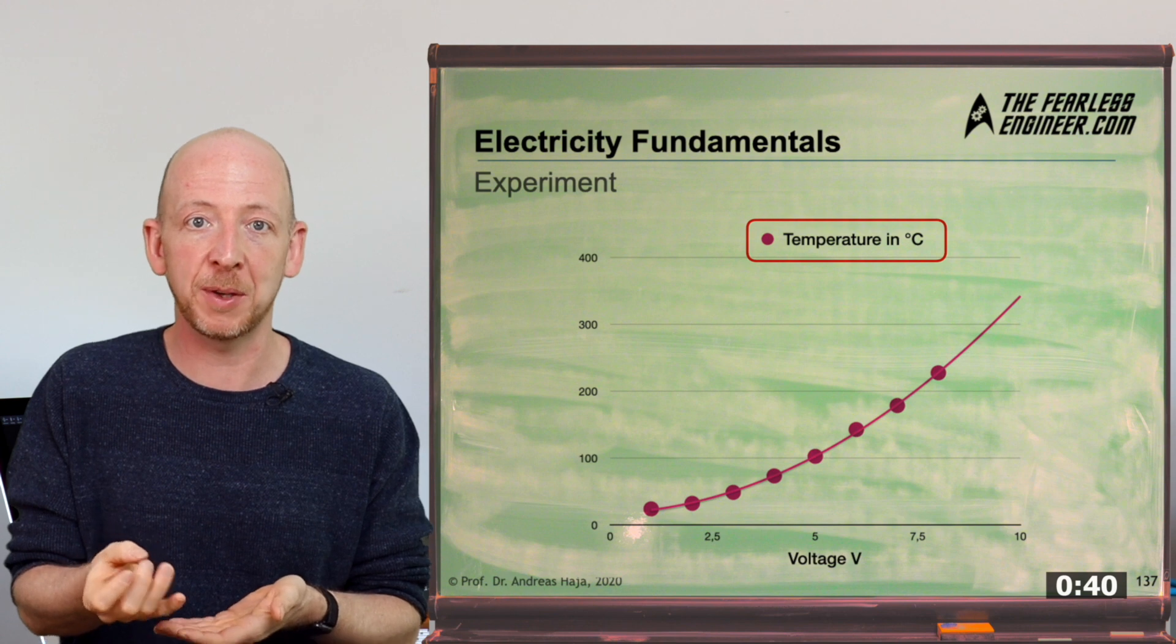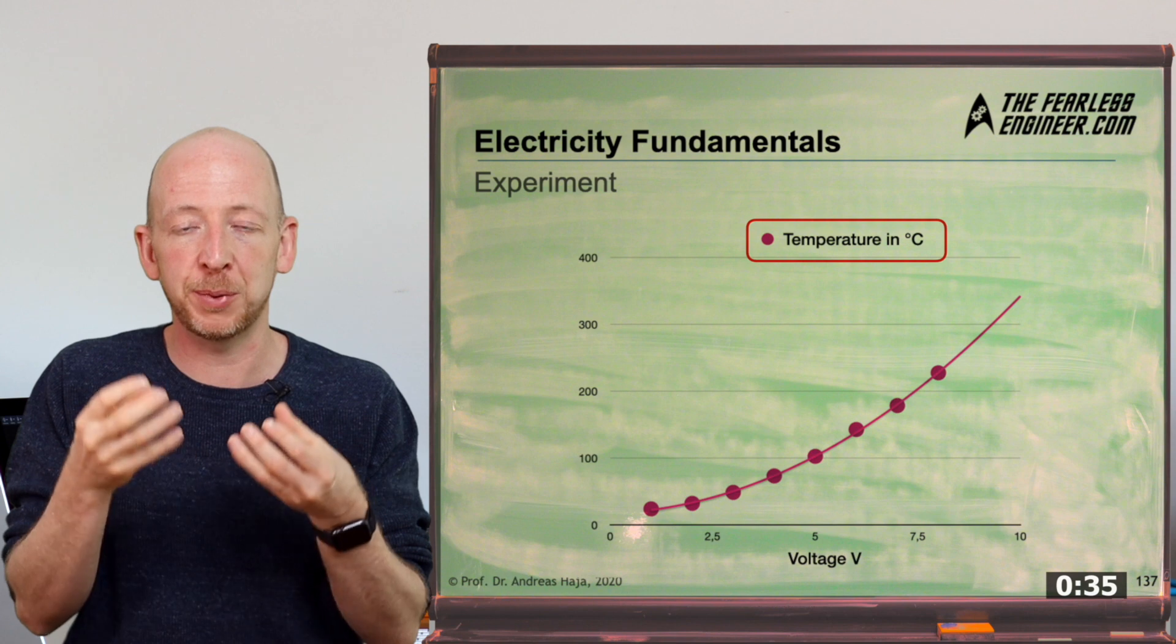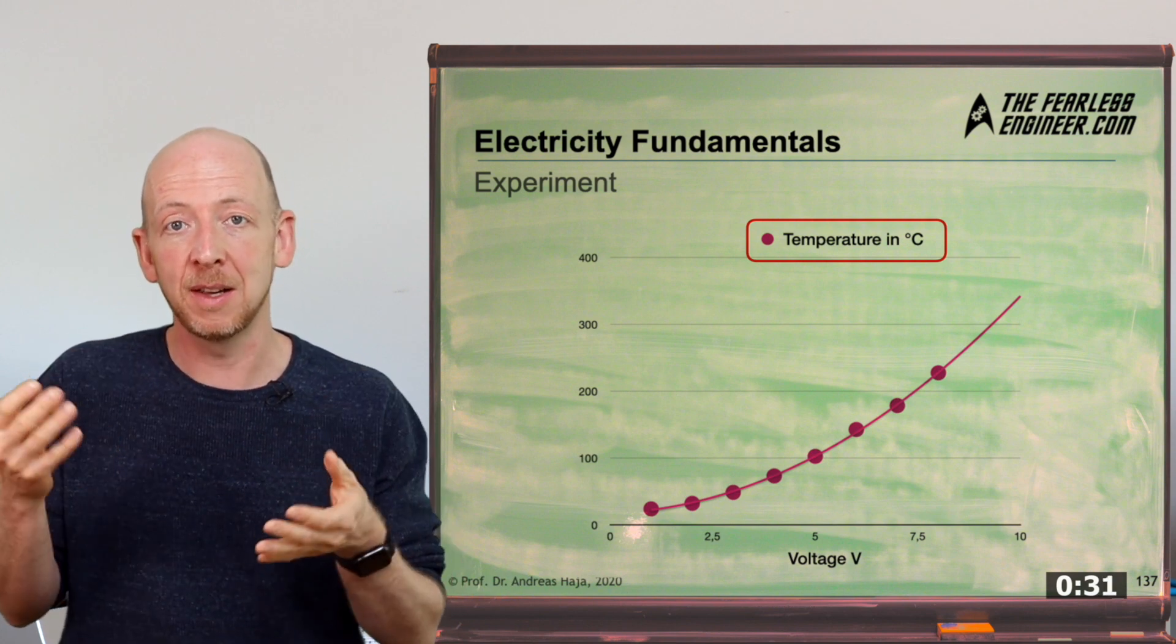This is well to be expected because at the purely ohmic resistance the kinetic energy of the electrons is converted into 100% heat energy. So it's quite evident that the curve must look exactly like the power curve. But even if theory has predicted this, I still find it fascinating when such predictions are reflected in your own measurements.